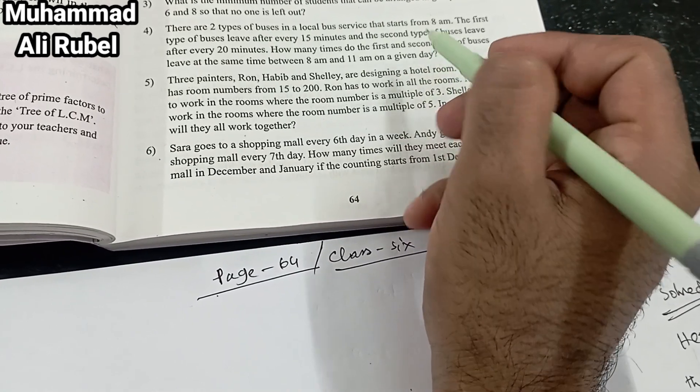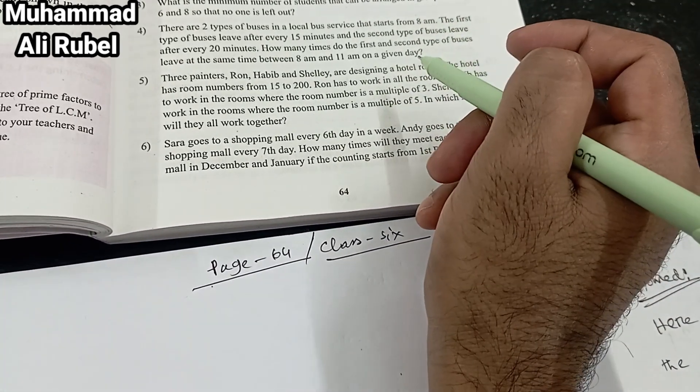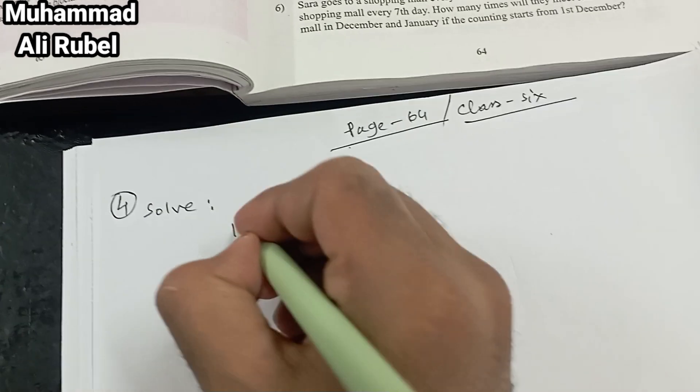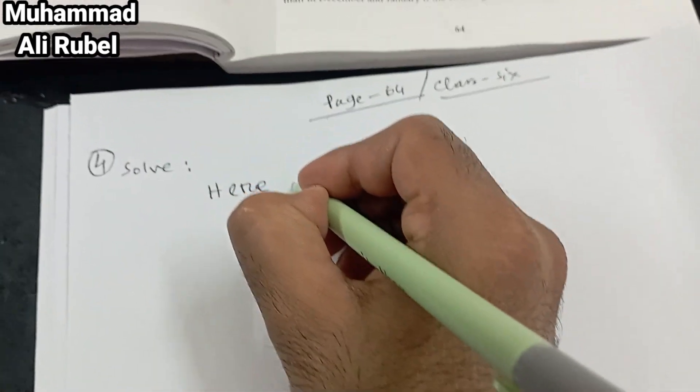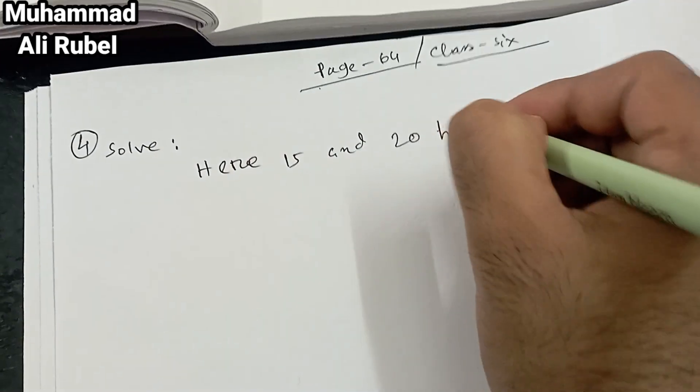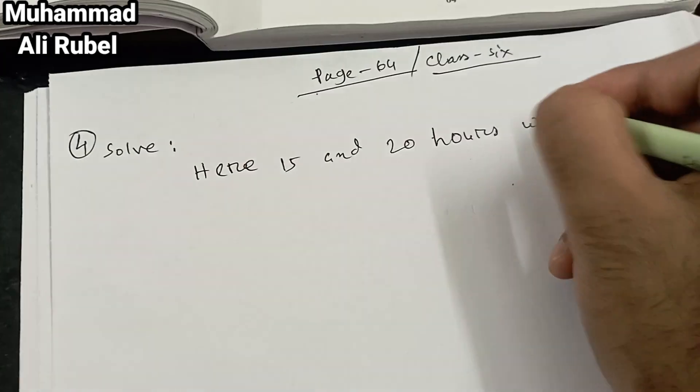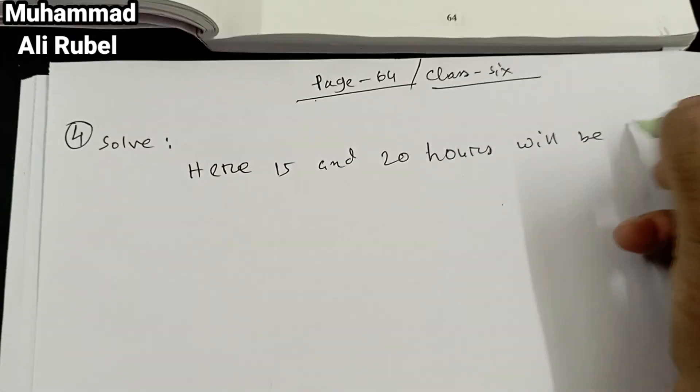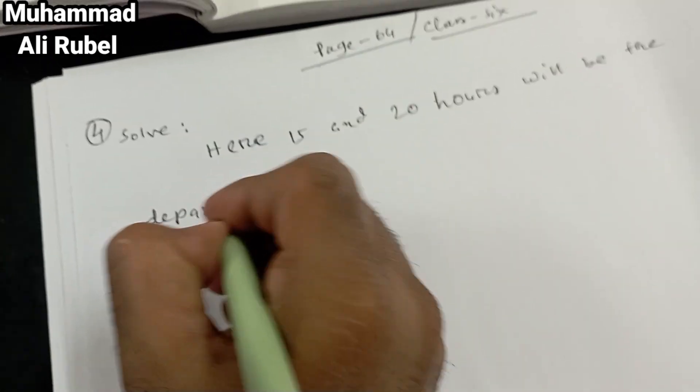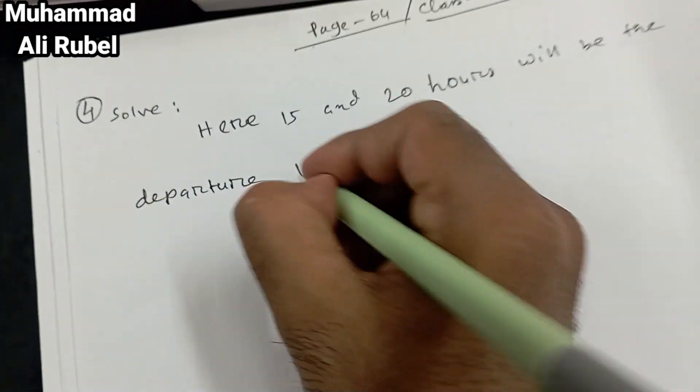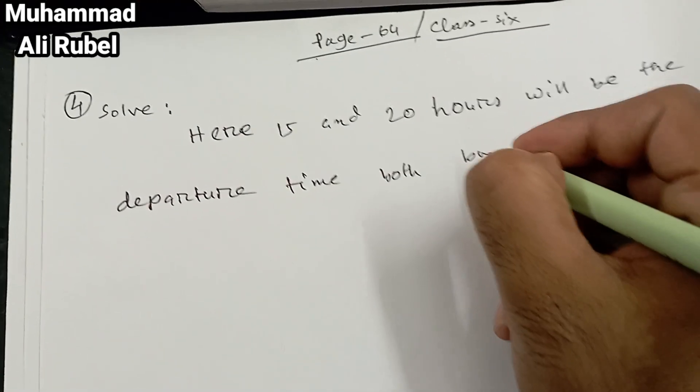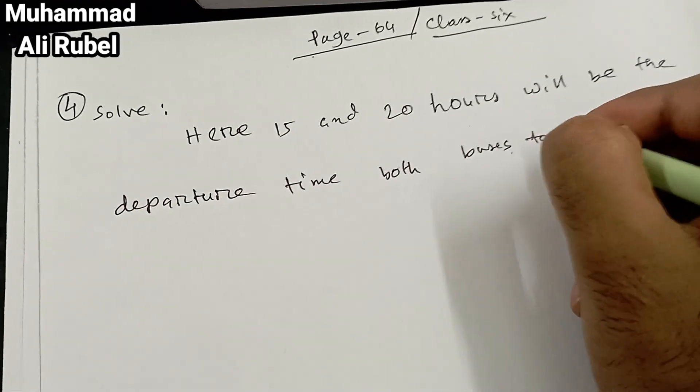Number 4, solve. Here 15 and 20 will be the departure time. We need to find the first time both buses leave together.